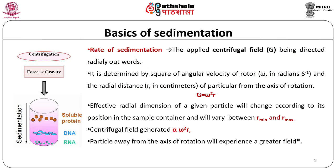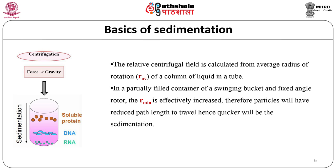Basics of sedimentation. The rate of sedimentation depends upon the applied centrifugal field, which is directed radially outwards. It is determined by the square of the angular velocity of the rotor and the radial distance from the axis of rotation. The effective radial dimension of a given particle will change according to its position in the sample, varying between a minimum radius and maximum radius. Particles further from the central axis of rotation will experience a greater field. The relative centrifugal field is calculated from the average radius of rotation of a column of liquid in a tube — that is, the distance from the center of rotation to the middle of the liquid column in the centrifugation tube.